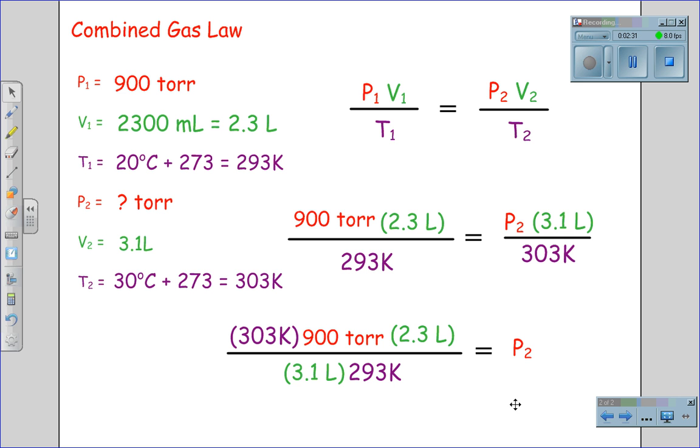Pressure 2, when calculated, will come out to be 690.53 torr. This is the combined gas law.